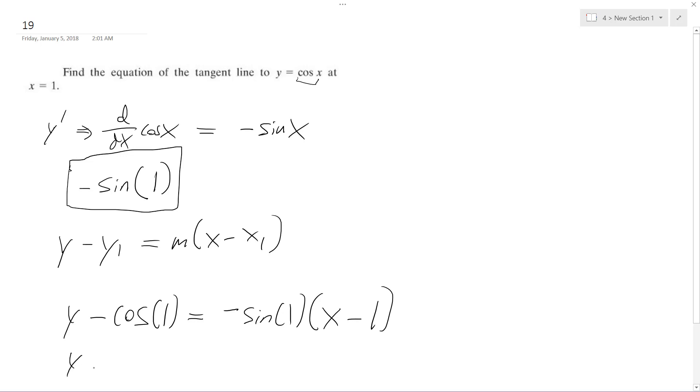So we're going to have y is equal to negative... I'm going to move the cosine over, but we're going to have negative sine of 1 of x plus sine of x because the two negatives cancel out, or sine of 1 I mean. And then plus cosine of 1.